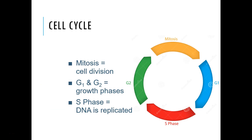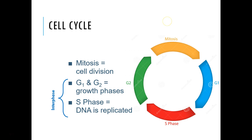First, a brief reminder about the cell cycle. The cell cycle is a series of events that the cell goes through — it involves growth, DNA replication, more growth, and then cell division. This series of events happens in every single cell that is dividing. We call cell division mitosis, and we group everything else as interphase.